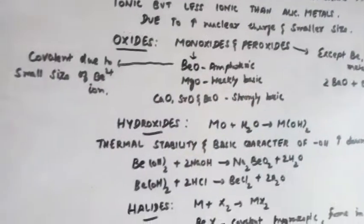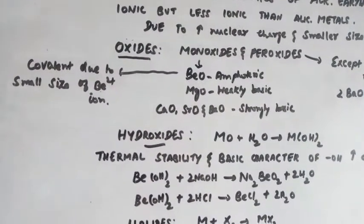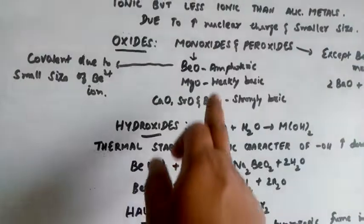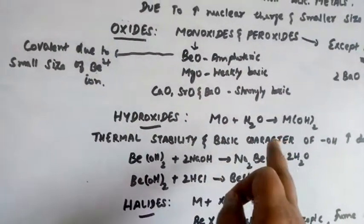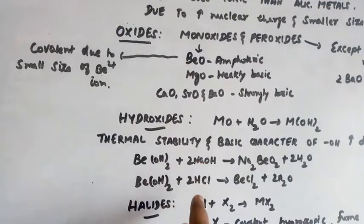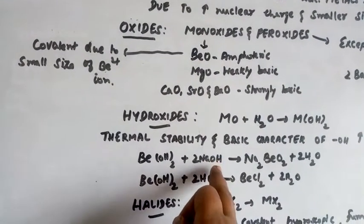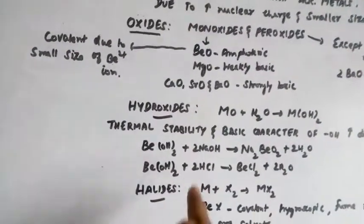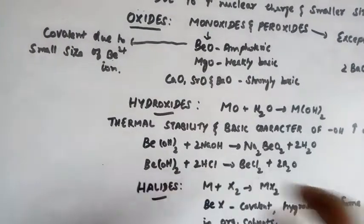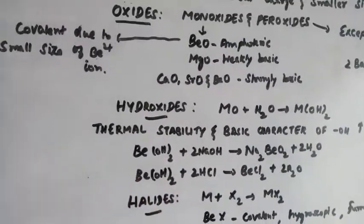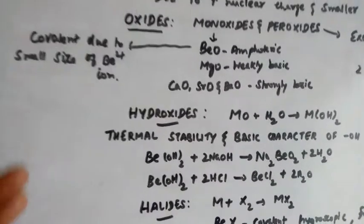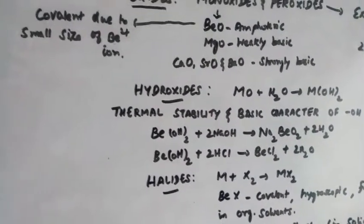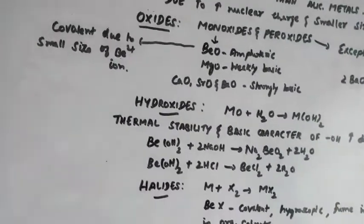Beryllium oxide is amphoteric in nature. Amphoteric means both acidic as well as basic in nature. Beryllium hydroxide reacts with a base — at that time it acts as an acid, so acid plus base gives salt plus water. In the same manner, beryllium hydroxide reacts with hydrochloric acid and in that situation it acts as a base. In both cases it forms salt and water.